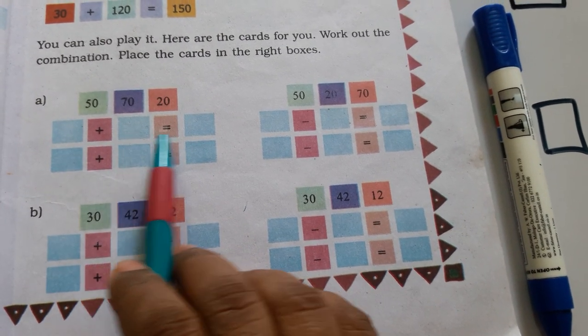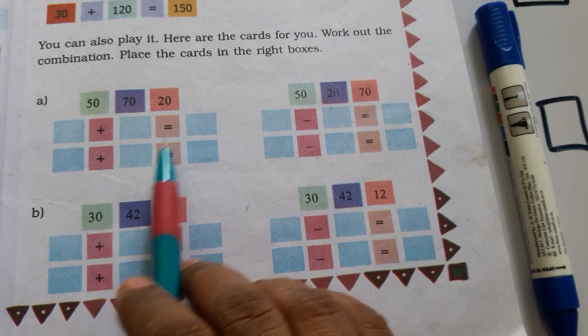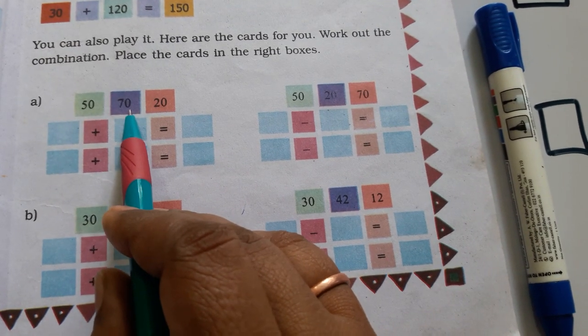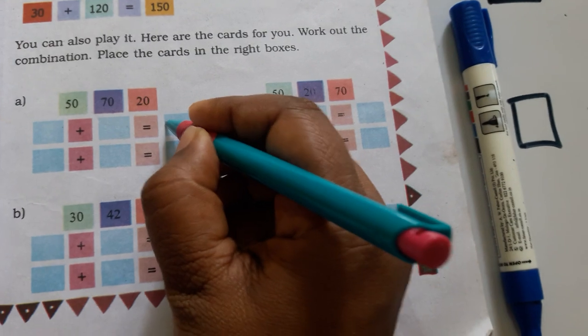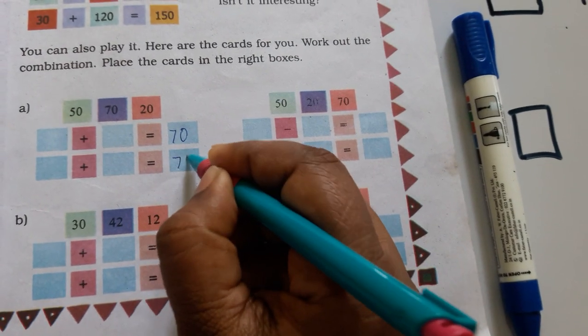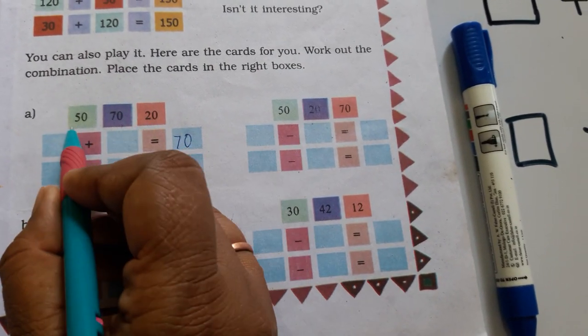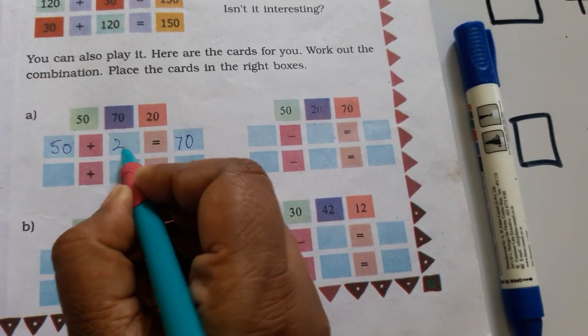Two numbers adding to make the greatest number. We will write the greatest number. This is the greatest number. We will write it here, both the cases. And the other numbers, other left two numbers that is 50 and 20 here.